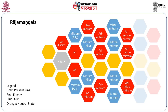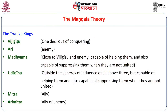This is the Raja Mandala. Based on it, Chanakya/Kautaliya identifies 12 types of kings. The twelve kings are: Vijigishu (the one desirous of conquering), Ari (the enemy), Madhyama (close to both Vijigishu and the enemy, capable of helping or suppressing either when they are not united), and Udasina — who is outside the spheres of influence of all three, but also capable of helping or suppressing them. These are some kind of neutral parties — think of India, Pakistan, and maybe Iran or China.